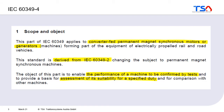One of the first things you see is that it deals with converter-fed machines. In traction, the electric machine is always connected to a converter — a power electronic device which controls voltage and current for the machine. The standard is valid for both motors and generators, covering all different types of electric traction machines.